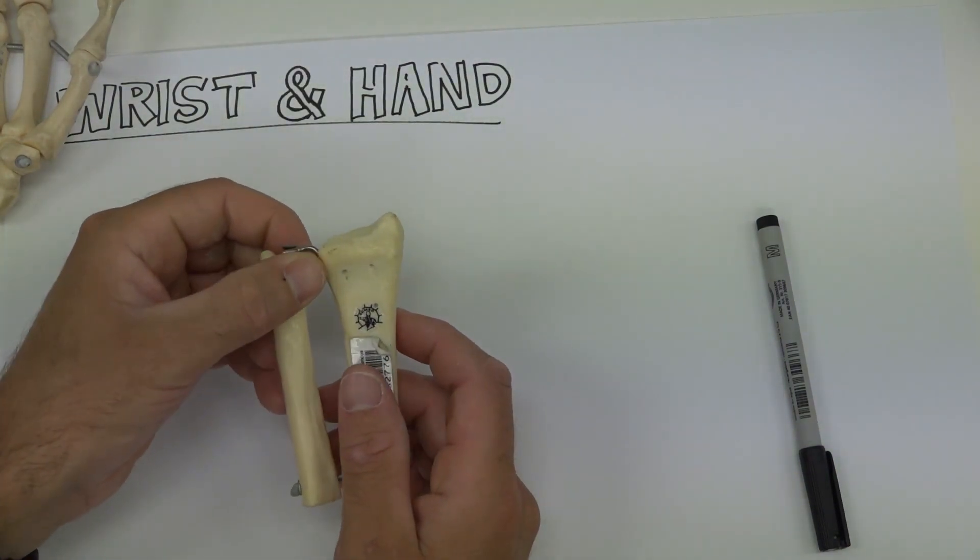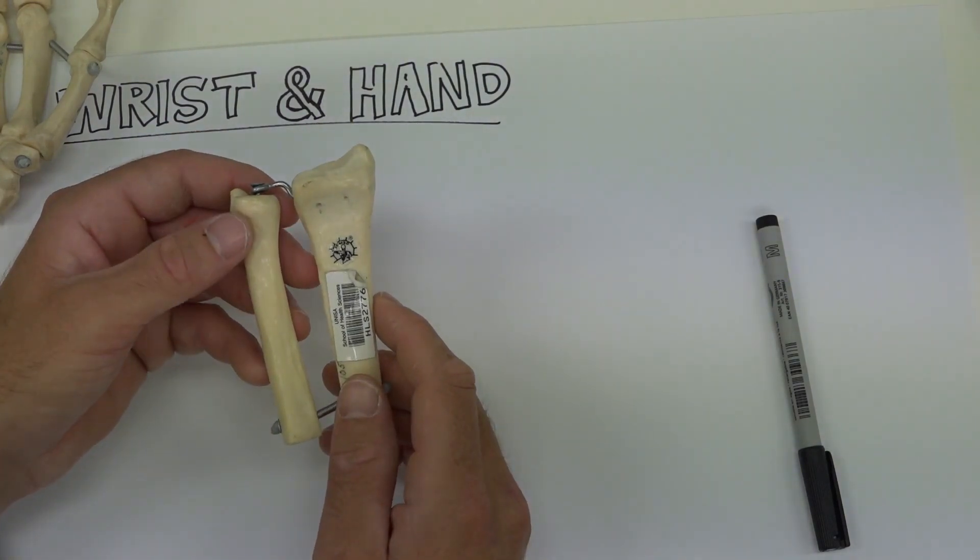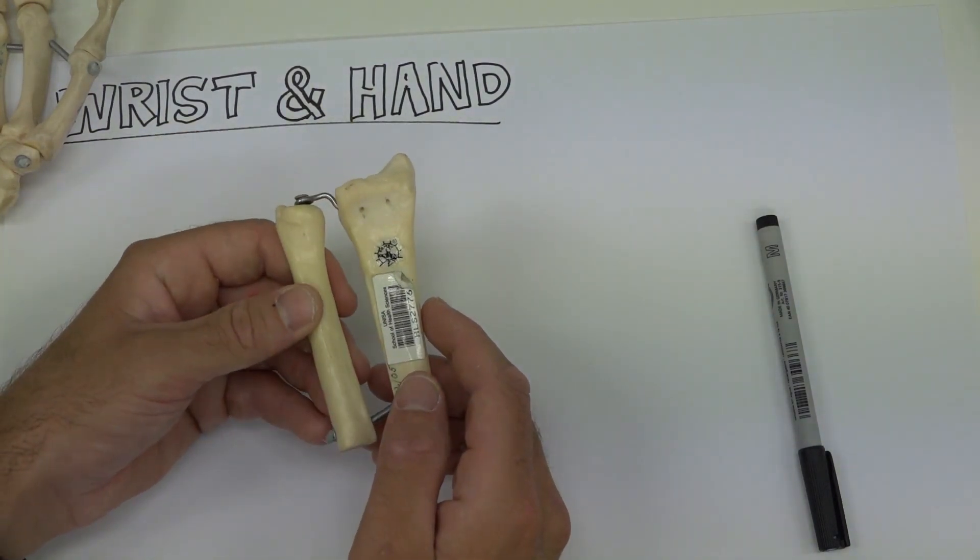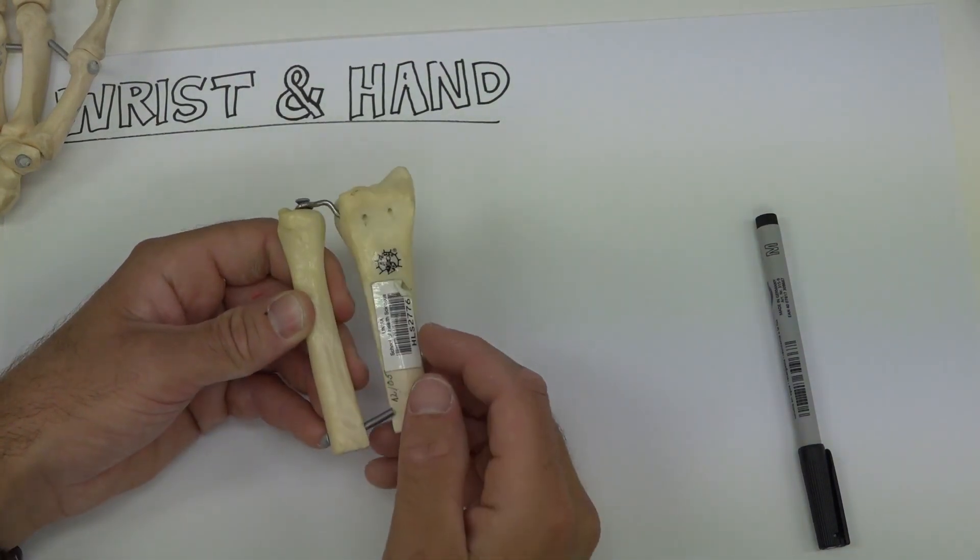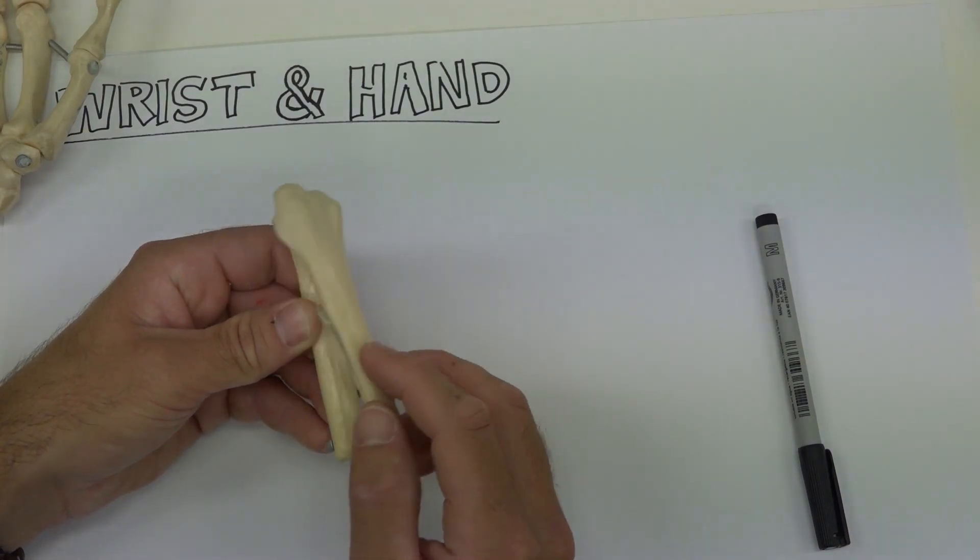They come together and form a pivot joint, just like they did at the proximal radioulnar joint around the elbow. The ulna bone stays still and it's the radius which pivots around the ulna like this.